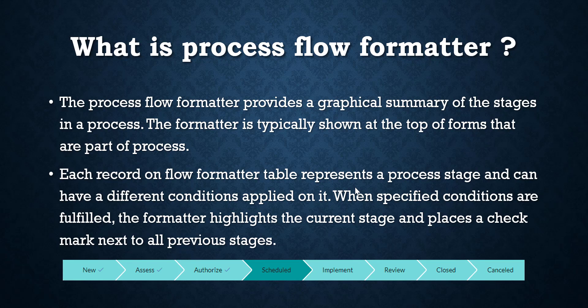Each record on the flow formatter table represents a process stage and can have a different condition applied on it. When specified conditions are fulfilled, the formatter highlights the current stage and places a checkmark next to all previous stages.